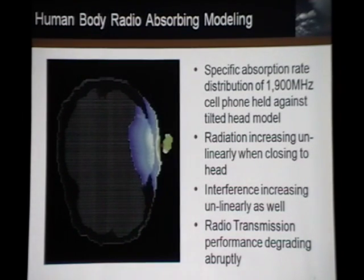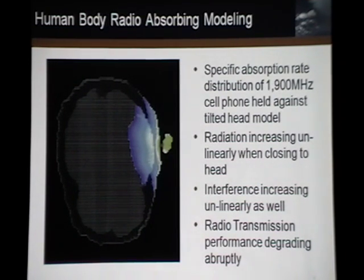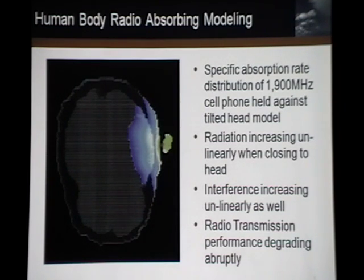Human body radio absorption models are also very important. It depends on how you hold the antenna — whether it's close to the head, brain, or other body parts. Radiation increases nonlinearly when you bring the device close to the body, and interference also increases nonlinearly. Radio transmission performance degrades very rapidly when you get too close to the body.